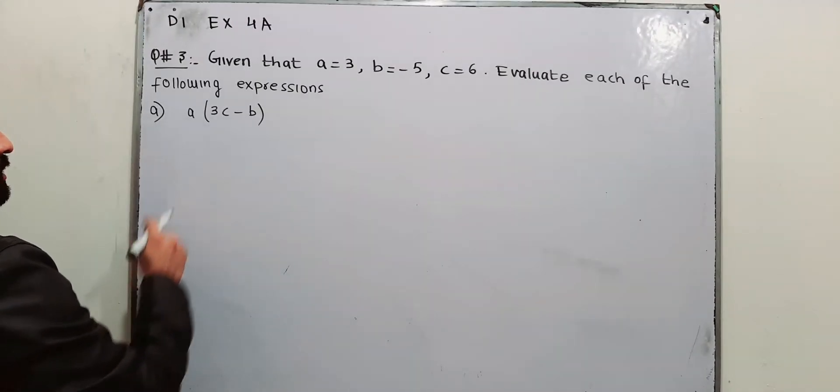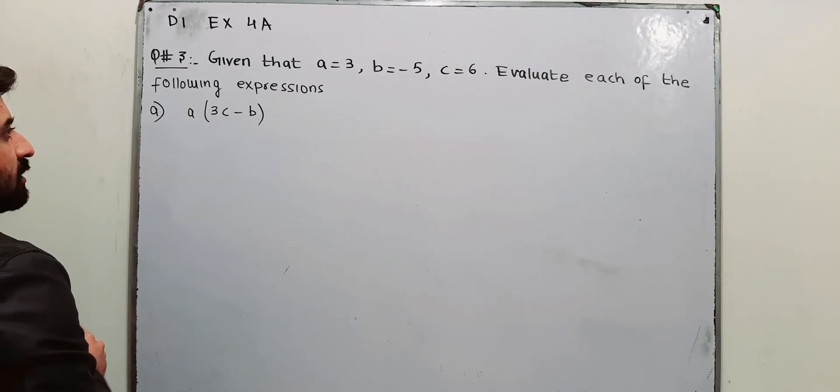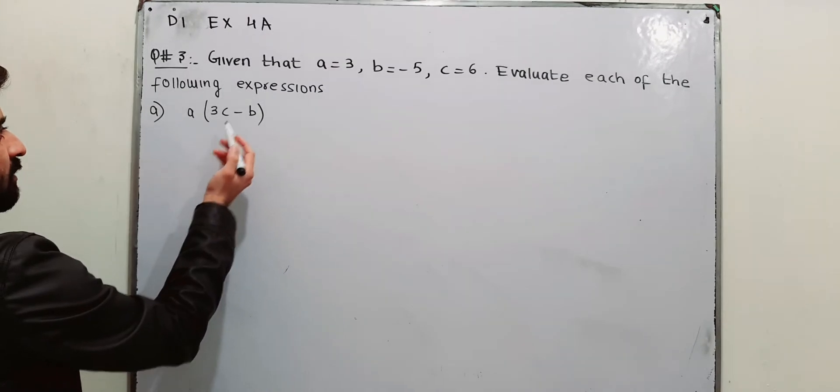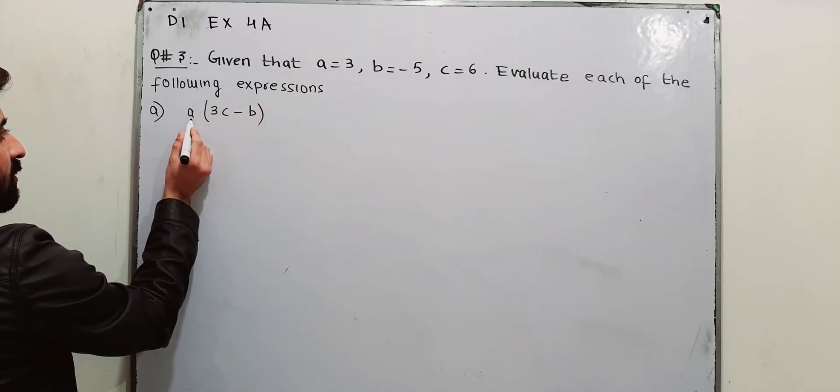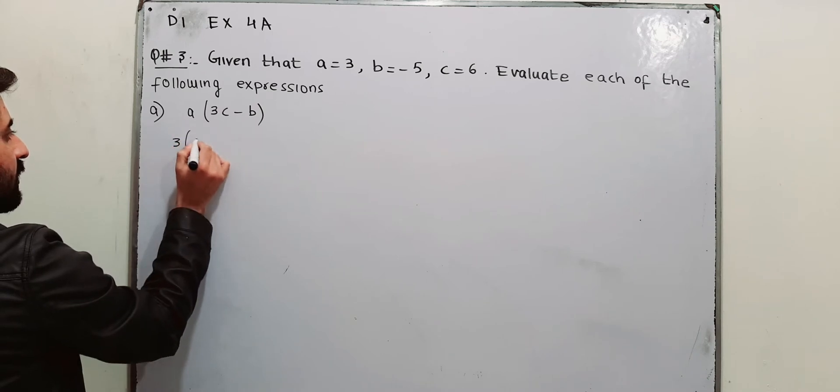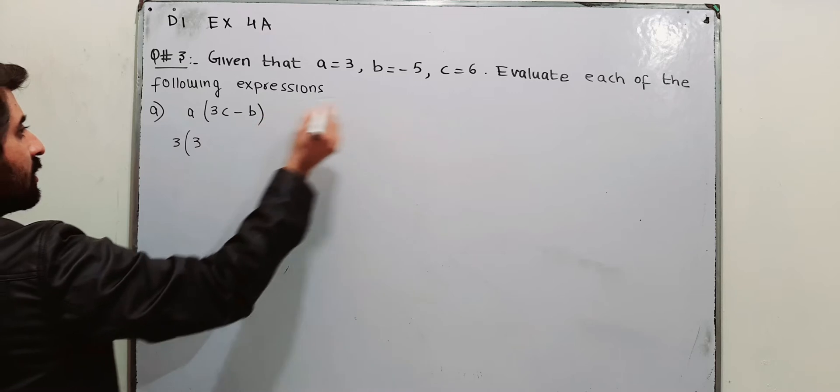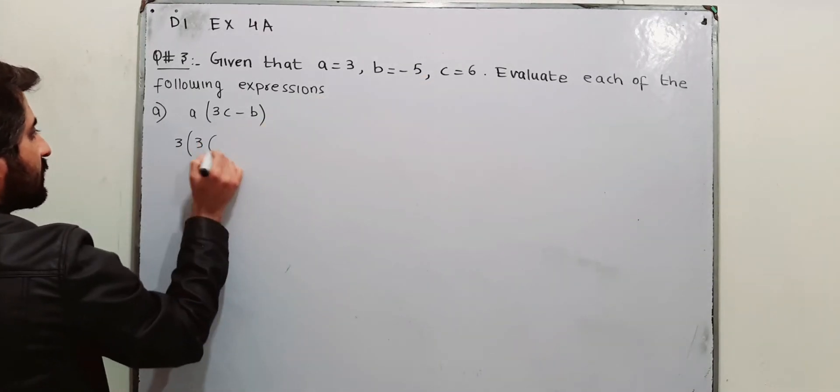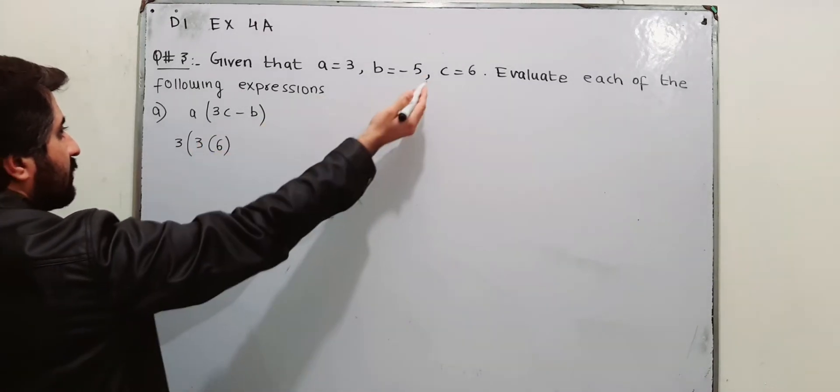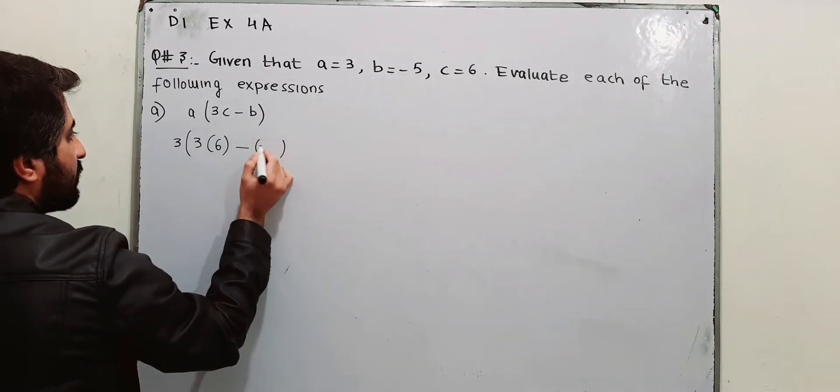We have to evaluate the value of A(3C - B). Simply put the values of A in place of A, use 3. Then bracket 3 in place of C, use 6. The value given for C is 6 minus in place of B, use minus 5.